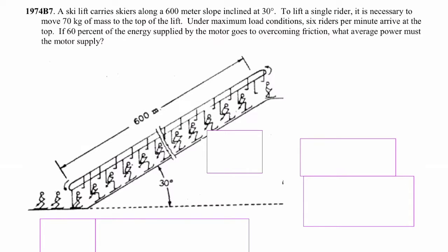A ski lift carries skiers along a 600-meter slope inclined at 30 degrees. To lift a single rider, it is necessary to move 70 kilograms of mass to the top of the lift. Under maximum load conditions, six riders per minute arrive at the top. If 60% of the energy supplied by the motor goes to overcoming friction, what average power must the motor supply?